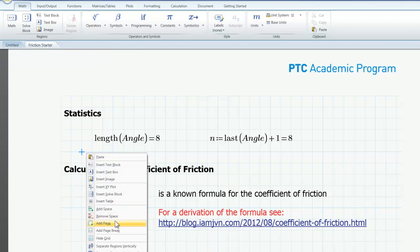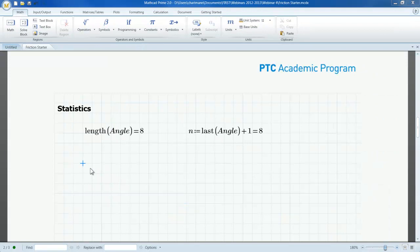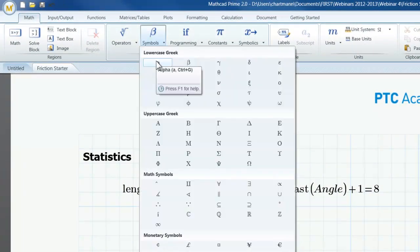I'm going to right-click here and I'm going to add a page just to give me a lot of space to calculate the remainder of my statistics. I will now add definition statements to calculate alpha, the mean angle measurement, capital V, the variance in angle measurements, and capital S, the sample standard deviation. Using the Greek letter alpha for the mean angle, I can insert an alpha symbol from the math ribbon by going to symbols and going down and selecting alpha.